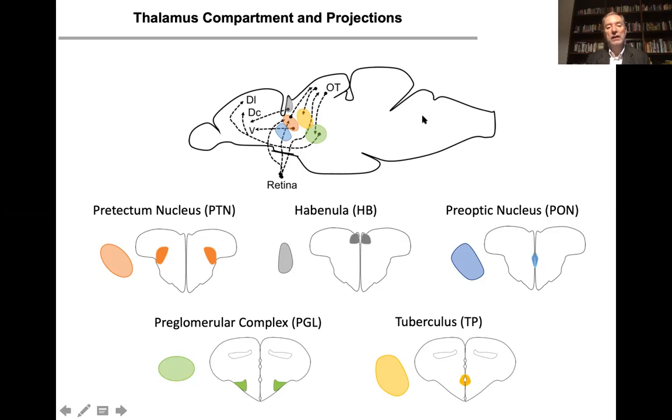So we looked at the anatomical organization of the pallium of zebrafish. This is the retina, and these are the main part of the thalamus, the main nucleus of the thalamus that projects to the telencephalon. And note that projection to DC and DL occur mainly from two regions: the PGLf, the preglomerular complex, this in green, and the habenula.